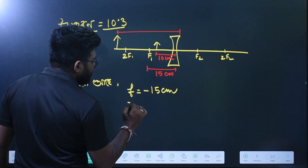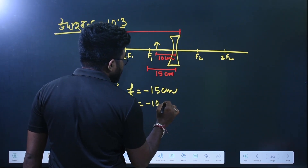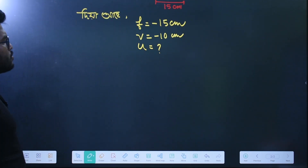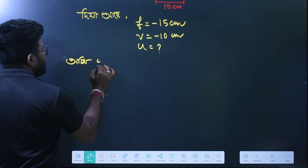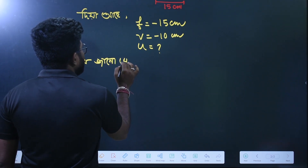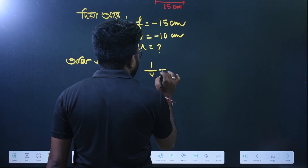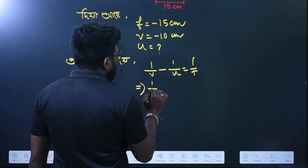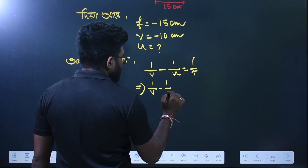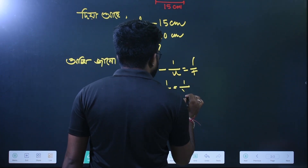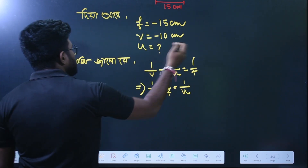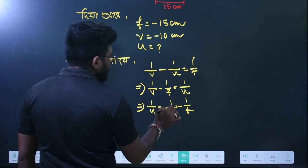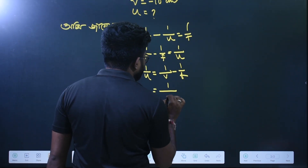The formula is: 1 by P minus 1 by U is equal to 1 by F. Rearranging: 1 by U is equal to 1 by P minus 1 by F. This is the lens formula rearranged to solve for U.